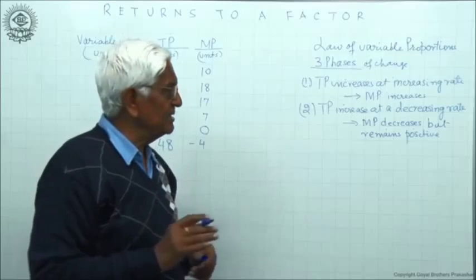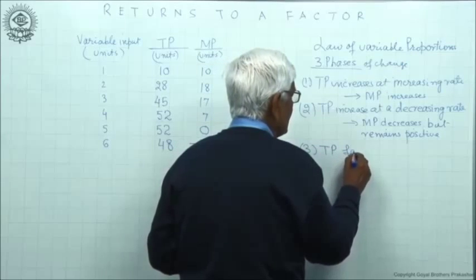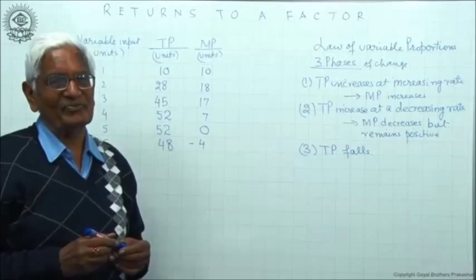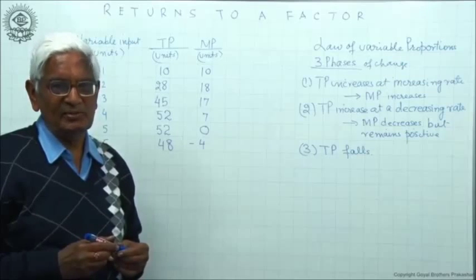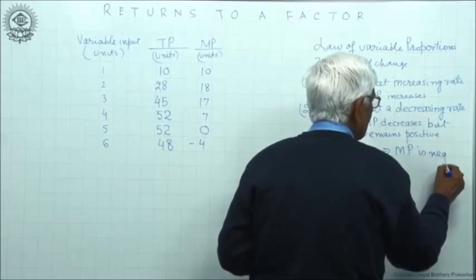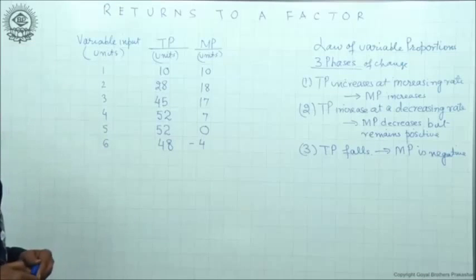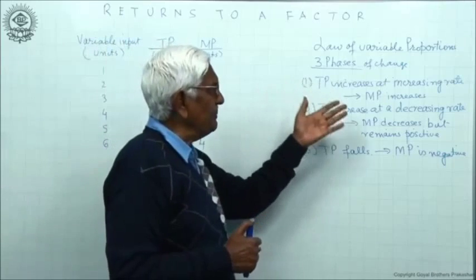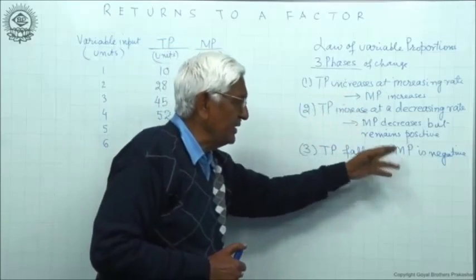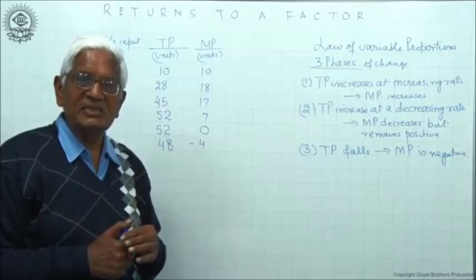First let us see what is the law. Then third: TP falls. Now TP falls obviously means that marginal product is negative, otherwise TP will not fall. So in the third phase we say marginal product is negative. It continues to fall but marginal product is negative. So if we express the law in terms of TP: 1, 2, 3. If we express the law in terms of MP: 1, 2, 3. These are the three phases of the law which have been established after observation.